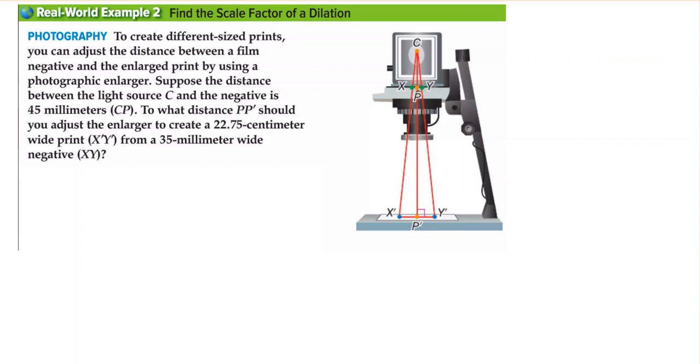To create different sized prints, you can adjust the distance between a film negative and the enlarged print by using a photographic enlarger. Suppose the distance between the light source C and the negative is 45 millimeters (CP). To what distance PP' should you adjust the enlarger to create a 22.75 centimeter wide print (X'Y') from a 35 millimeter wide negative (XY)?